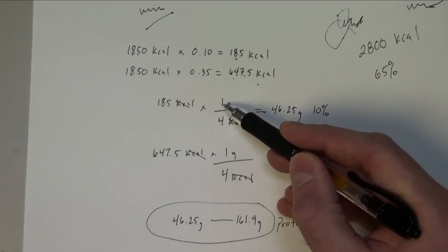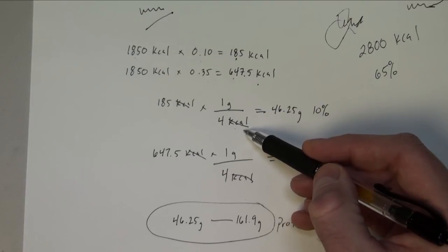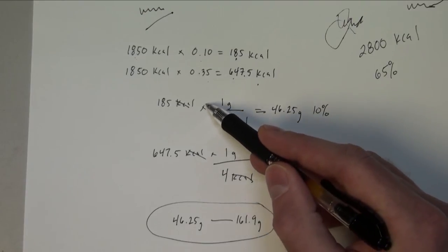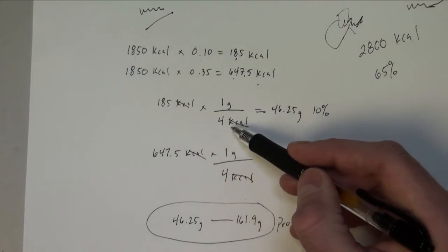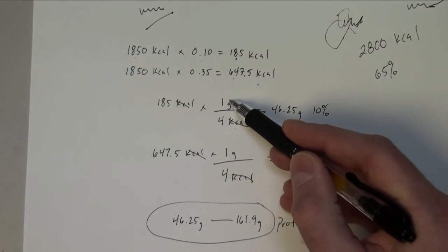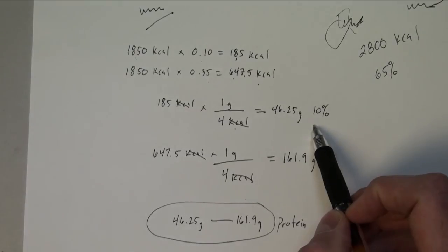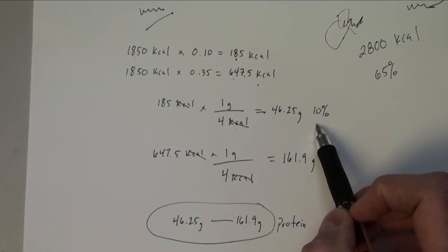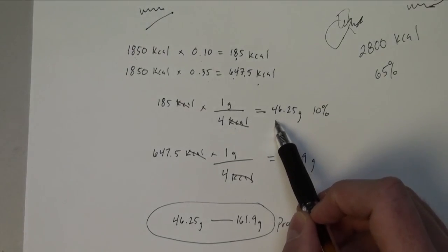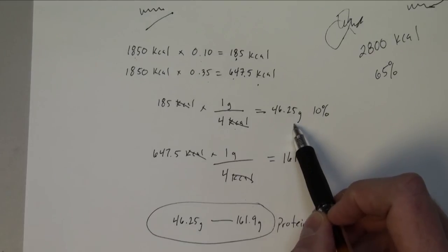So here we got my 185 kilocalories. And what I'm going to do is just put this as a proportion here. So one gram is equivalent to four kilocalories. And when I do this and I do a multiplication, what we'll see is my kilocalories will cross out and I'll be left with my grams number.